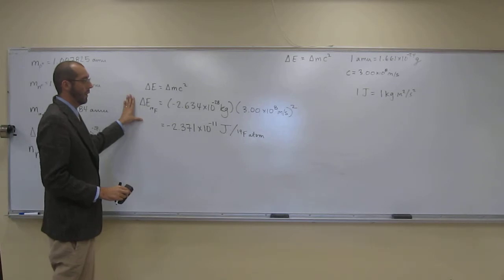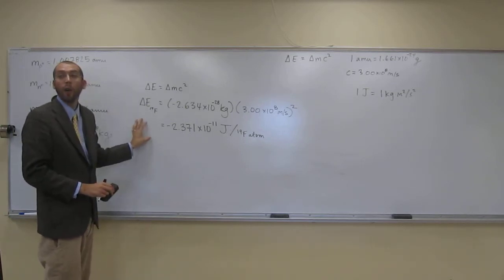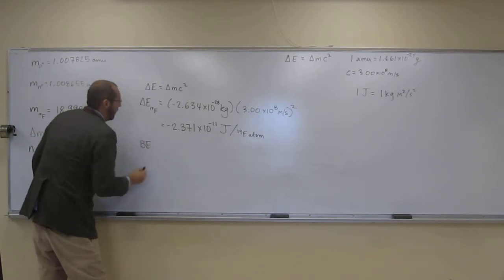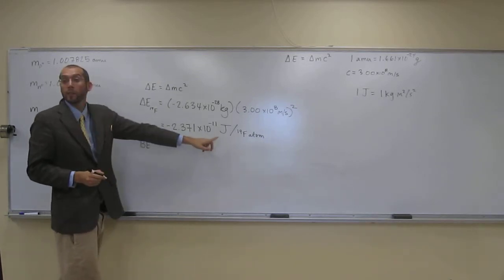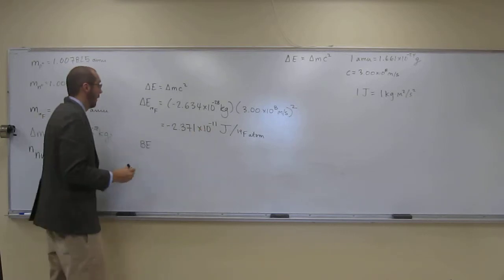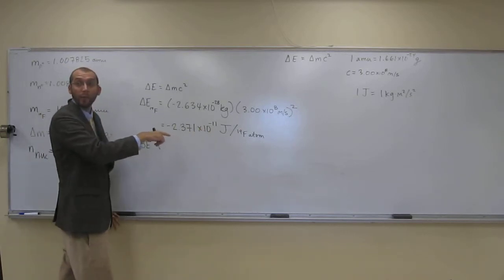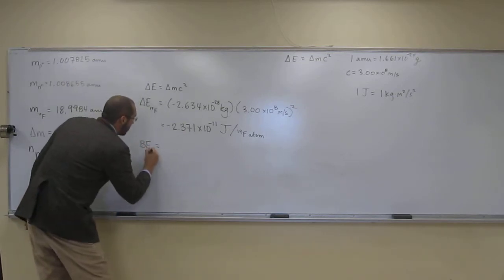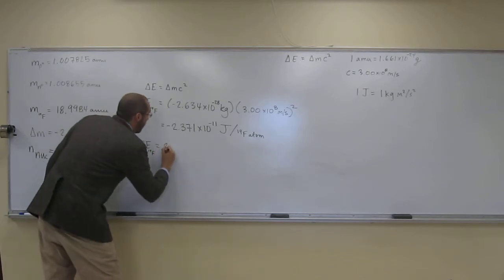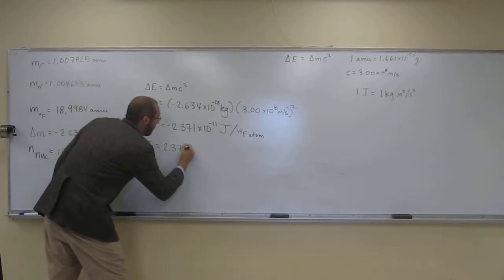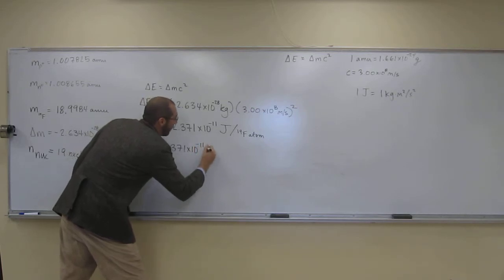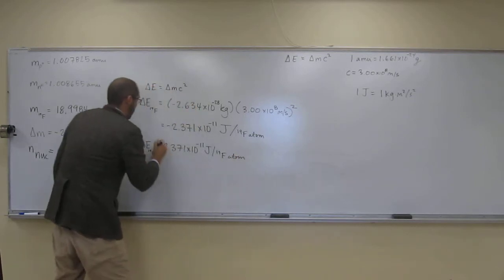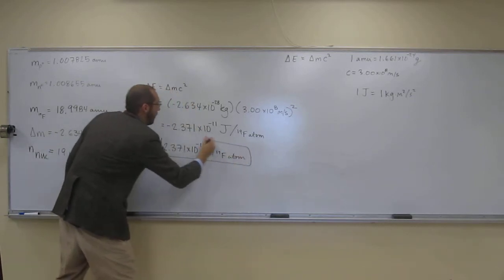That's the energy released. The binding energy is just going to be that times negative one — the binding energy is the opposite of the energy released. So the binding energy for one F-19 atom is 2.371 times 10 to the negative 11 joules per atom.